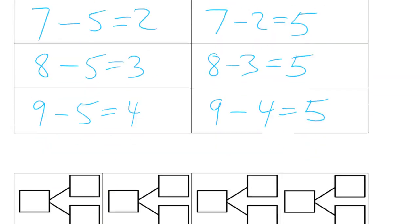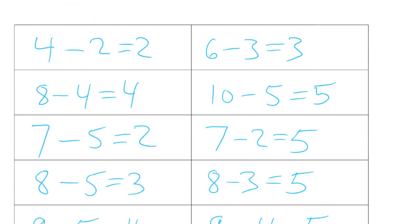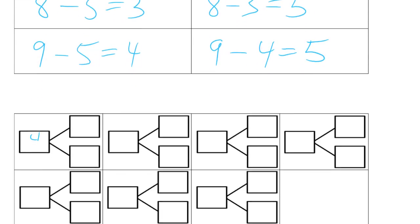And now we're going to write number bonds for all of these. There's only one number bond. Remember, you had the doubles — the double for four was two twos, the double for six was two threes, the double for eight is two fours, and the double for ten is two fives.